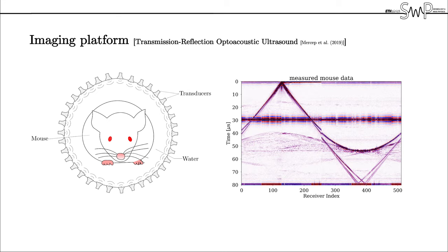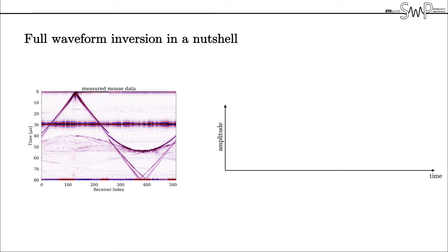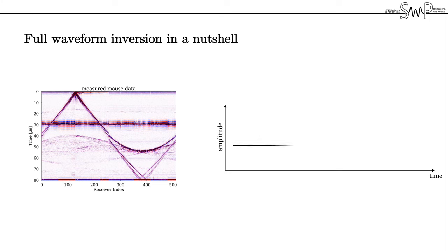On the right you can see a shot gather of the acquired data for a particular emitting transducer and all 512 receiving elements. So this is the data from which we want to reconstruct an image of the internal speed of sound tissue structure of the mouse. Each column in this image corresponds to one receiver recording over time.